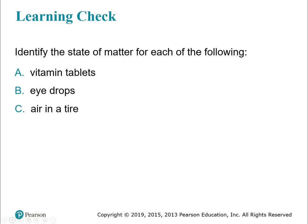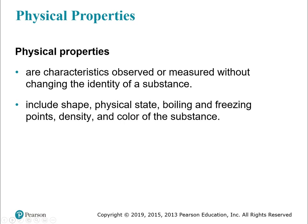Now quickly identify the state of matter for each of the following. Vitamin tablets — those are solid. Eyedrops — they'd better be liquid; solid eyedrops sounds painful. Air in a tire — that's a gas. Now we're going to move on to talking about physical properties, chemical properties, physical changes, and chemical changes.